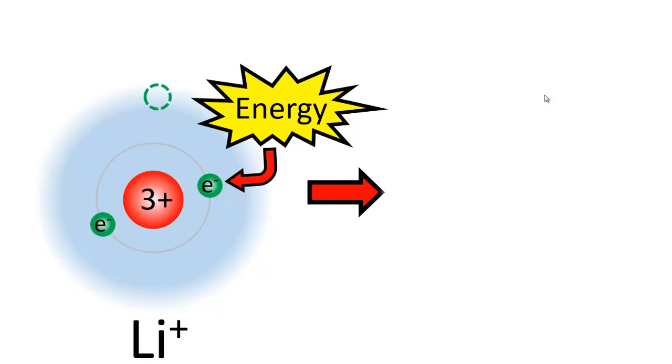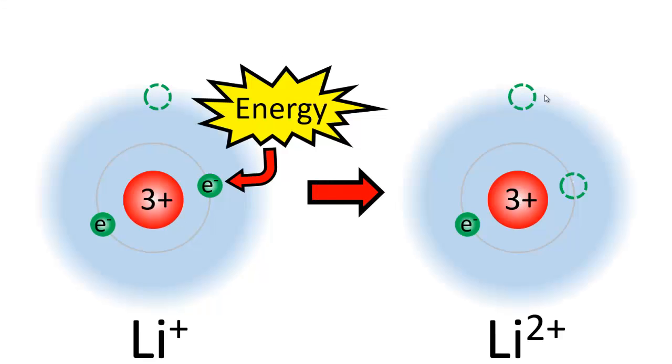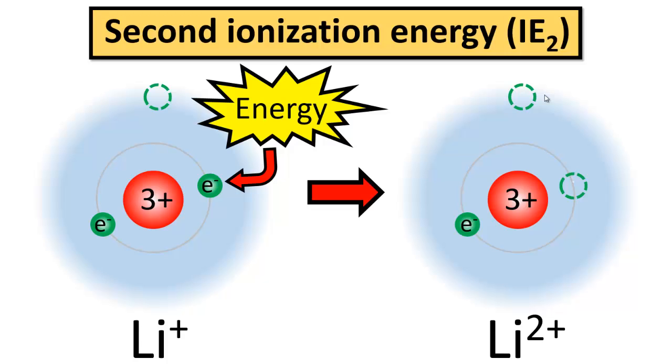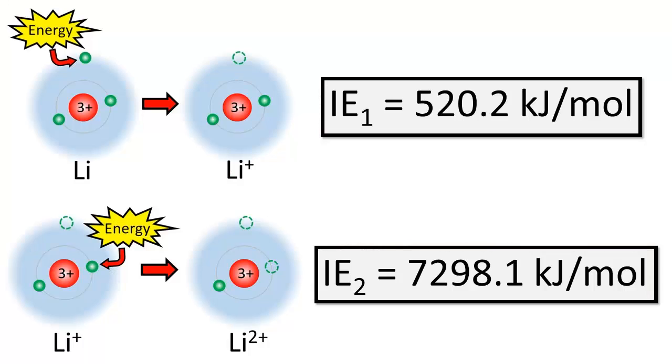What if we wanted to remove a second electron from the lithium atom, resulting in a cation with a 2+ charge? This amount of energy would be called the second ionization energy of the atom. It's important to understand that the second ionization energy is not the amount of energy required to remove two electrons, but rather the amount of energy required to remove one electron after the first electron has already been removed. Notice that the second ionization energy is significantly larger than the first ionization energy, and we'll explain why a little bit later.